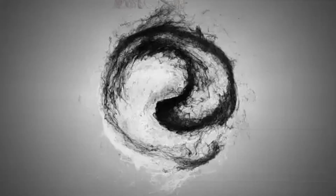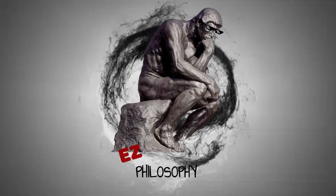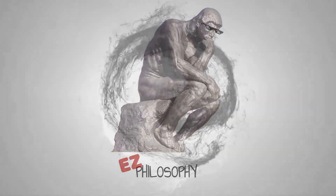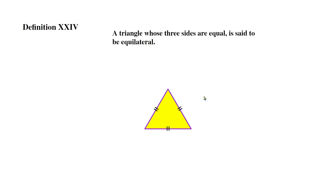Now we're getting into some triangle stuff. Definition 24: a triangle whose three sides are equal is said to be equilateral. So if the three sides of a triangle are all equal to each other, the name we give for it is an equilateral triangle.